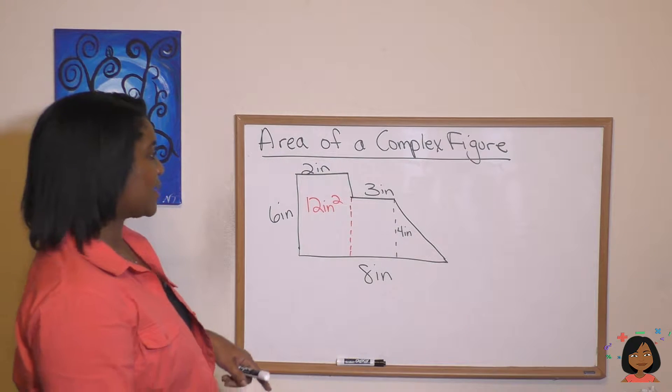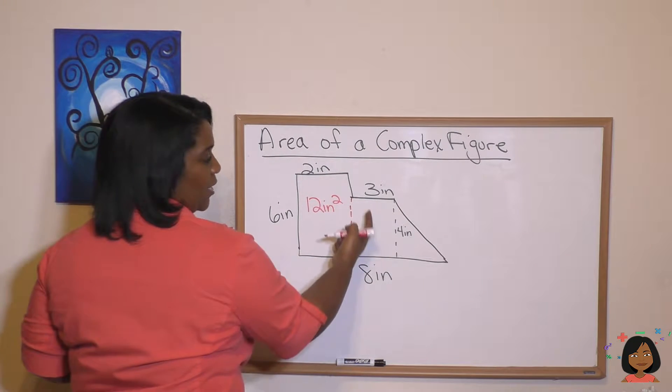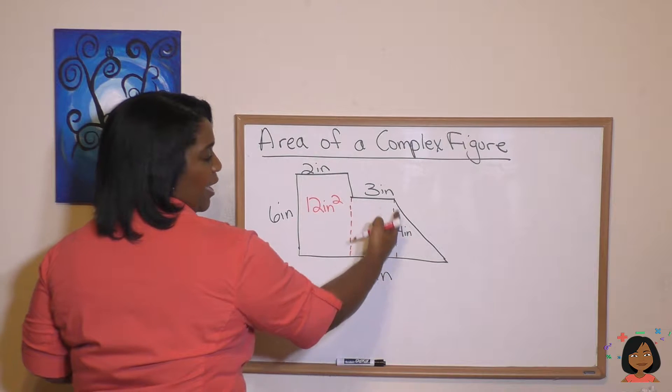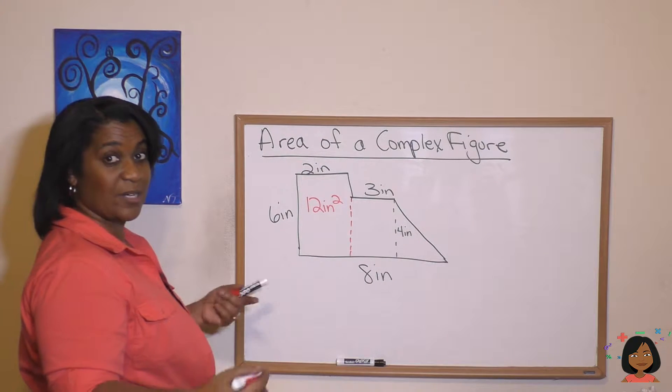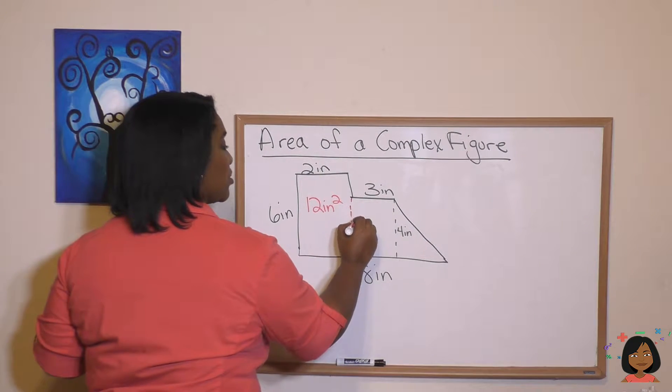I see another rectangle. I see one here. It's got this three and this four. We know that four times three is 12 inches squared.